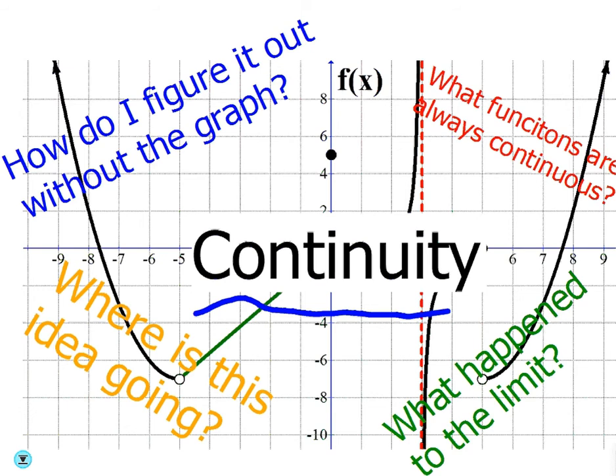For example, polynomials should always be continuous everywhere. There are no breaks. If you graph x cubed or x squared, you're going to see a continuous graph, so it's going to be no break. Therefore, it's continuous.